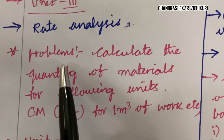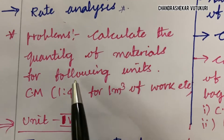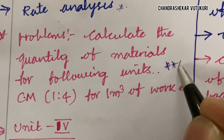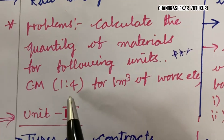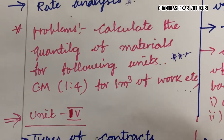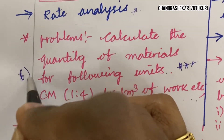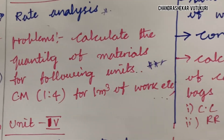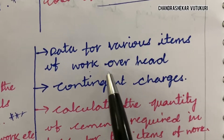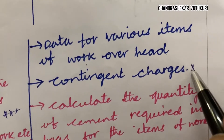Unit 3 covers rate analysis. One of the top questions is: calculate the quantity of materials for the following units — for example, CM 1:4 for 1 cubic meter of work, and so on. Such type of problem appears as the sixth question in the question paper. Data for various items of work, overhead, and contingent charges may also be a three-mark question.